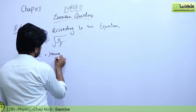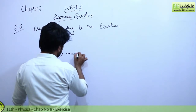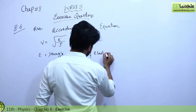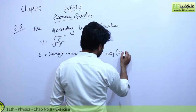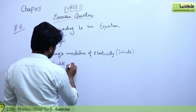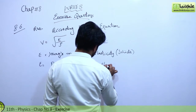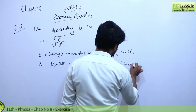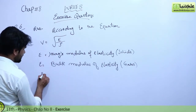E represents Young's modulus of elasticity, which is used for solids. For gases, we use the bulk modulus of elasticity.